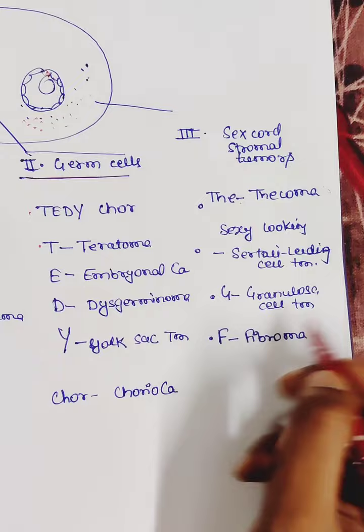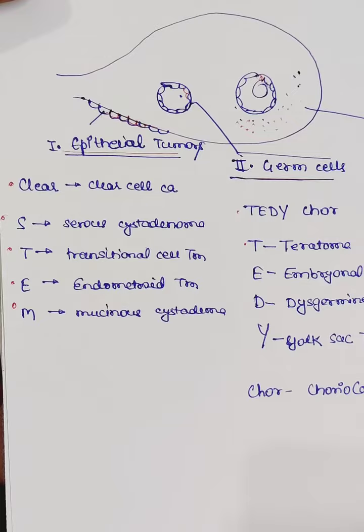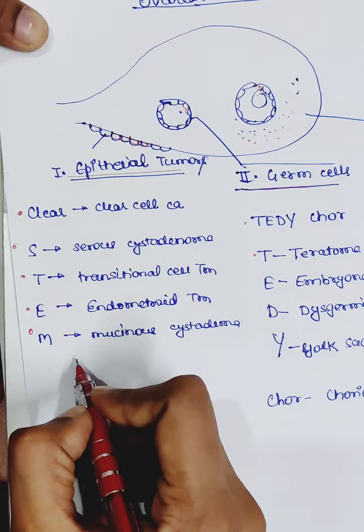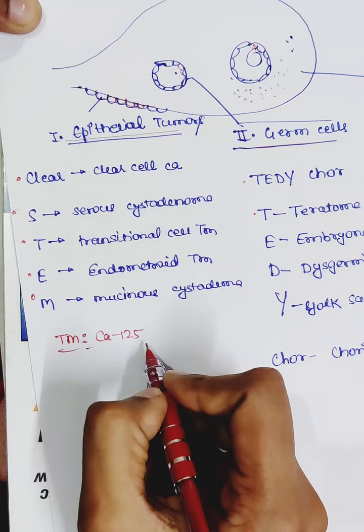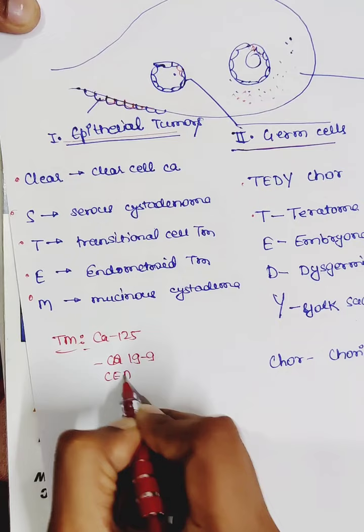So in this chart we can also add the tumor markers just for simplicity. So the tumor markers of epithelial cell tumor are CA125 for serous cystadenoma and CA19-9 and CEA for mucinous cystadenoma.